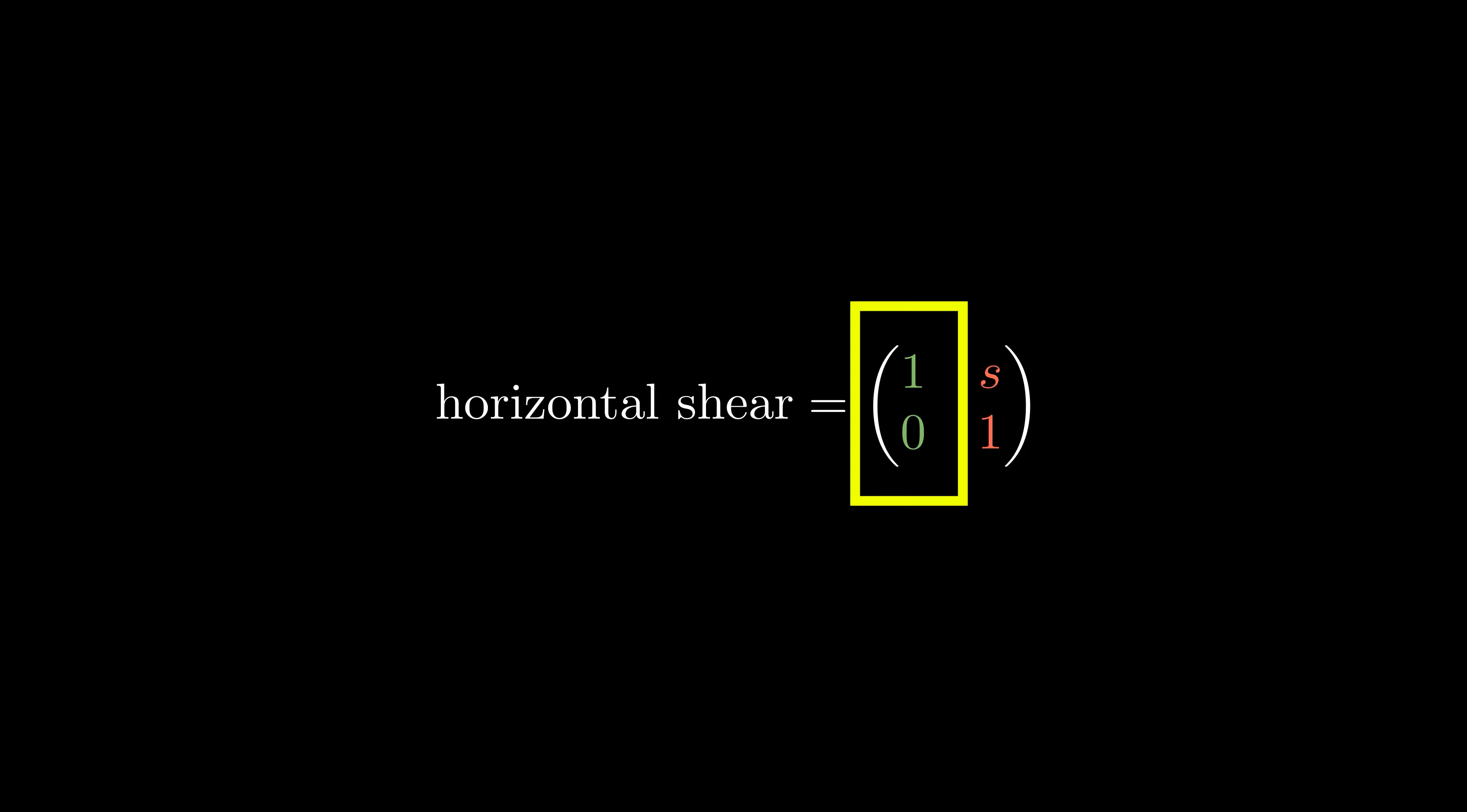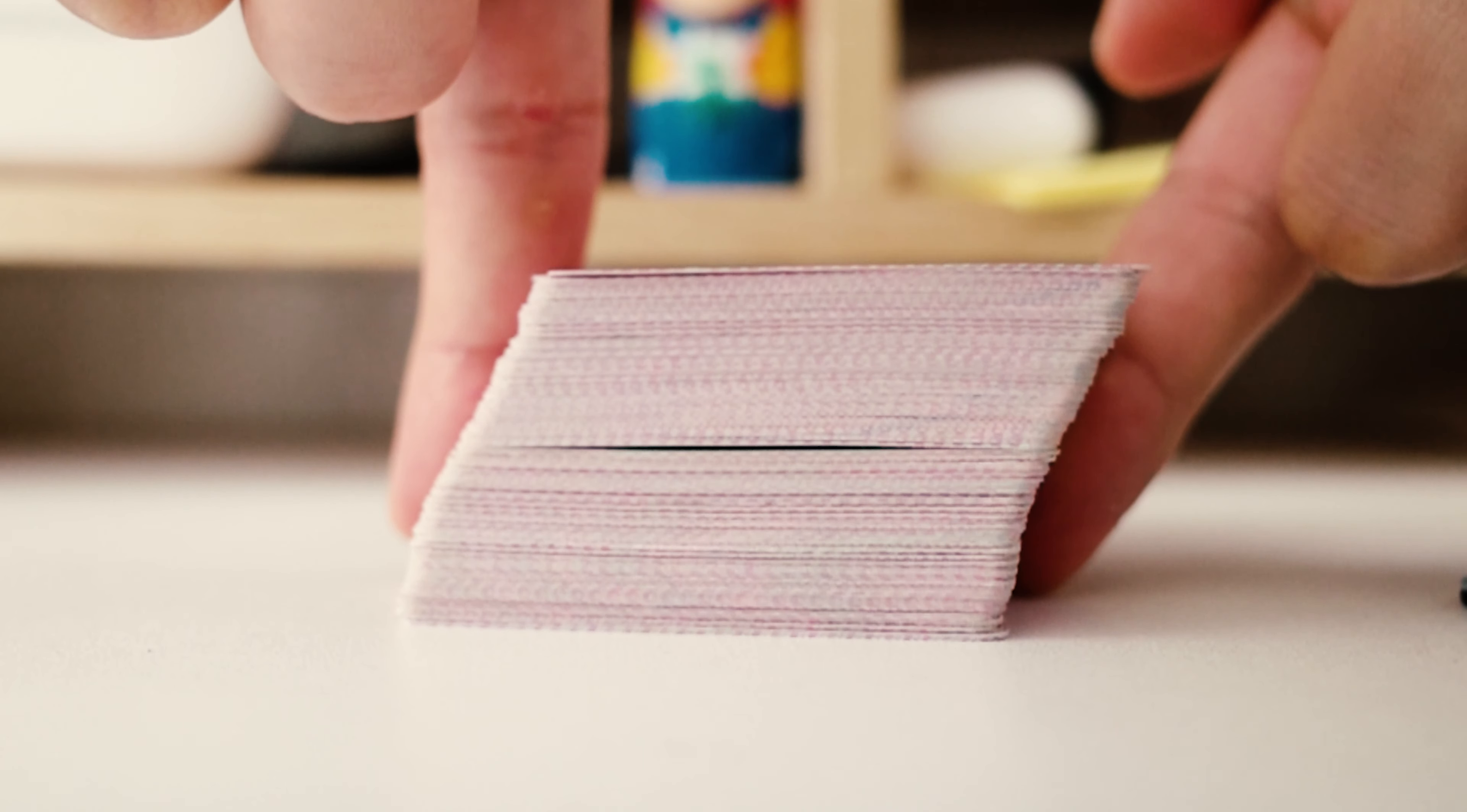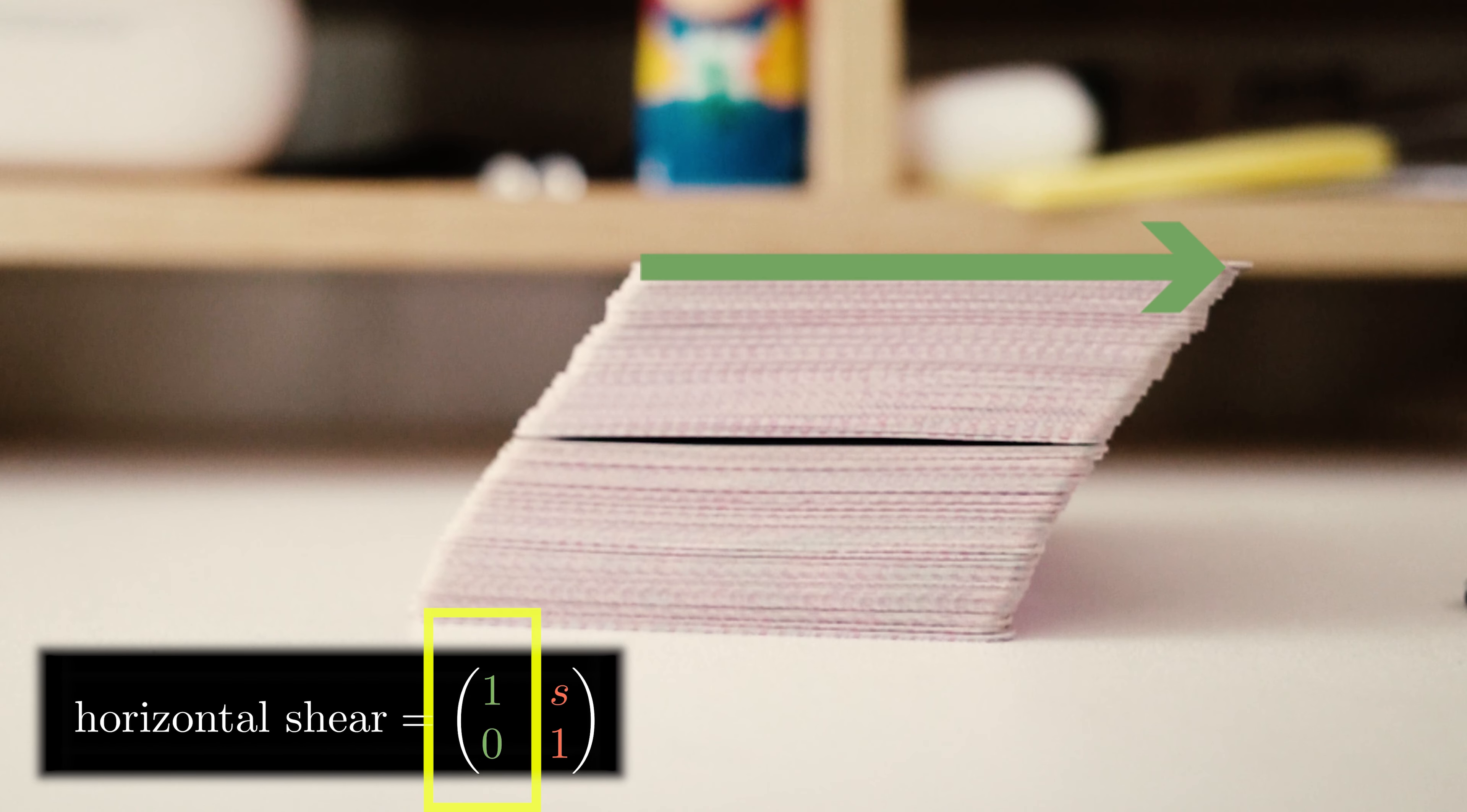Notice the x basis vector isn't changed, while the first value of the y basis vector changes. We can have an analogy of pushing a deck of cards. Two things you can notice: first, the width of each card doesn't change, which aligns with our x basis vector doesn't change. Second, you see the height of this stack of cards doesn't change.